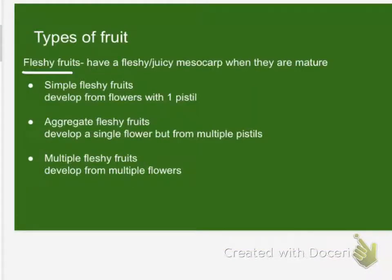We're talking about fruit. We're starting off with fleshy fruits, which are the kind of things that we typically think of as fruit. When I say fruit, none of you think of green beans, right? Those are dry fruits — we'll talk about those later. These have what we're calling a fleshy mesocarp, and the mesocarp is the middle part of the fruit.